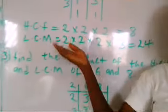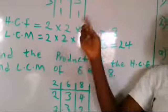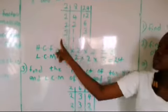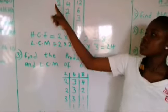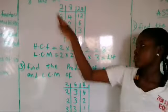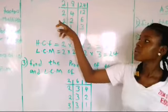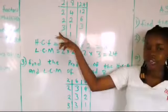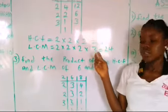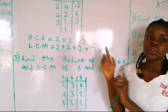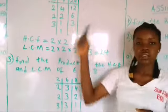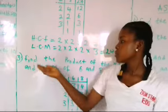Now to look for the LCM using the same method, you multiply all the divisors: 2 times 2 times 2 times 3, which gives you 24. So that is how to find the LCM using this method.